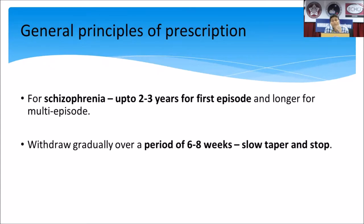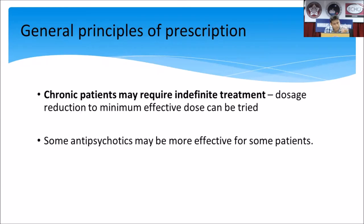Whenever you are withdrawing any antipsychotics, gradually taper and stop, because rebound psychosis is common and the rebound symptoms are very distressing for the patient. Even if the patient plans to stop, they should gradually taper the drug and then stop. Chronic patients may require indefinite treatment. For some unknown reasons, some antipsychotics are more effective for some patients — some may respond only to olanzapine, others only to haloperidol.